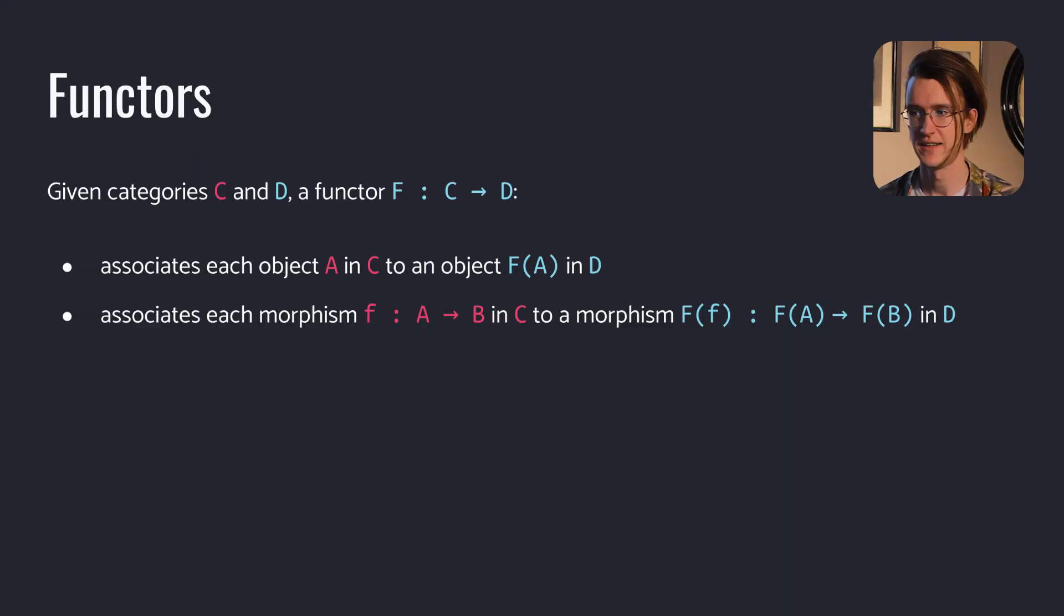A functor is a transformation or mapping between categories. It's a way to turn one category into another. Given categories C and D, a functor F from C to D associates or maps each object A in C to an object F of A in D. It also maps each morphism F from A to B in category C to a morphism F of F from F A to F B in D. Note that different objects in C don't necessarily map to different objects in D. Functors are not necessarily injective.